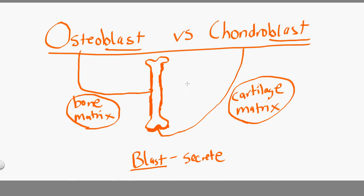In this video, we're going to take a quick look at the difference between osteoblast and chondroblast. First of all, the word 'blast' means secreting — something is secreting something out. Osteoblasts are secreting bone matrix, meaning when it's time for this bone to get thicker, the osteoblast cells are coming in here and pouring and blasting more bone.